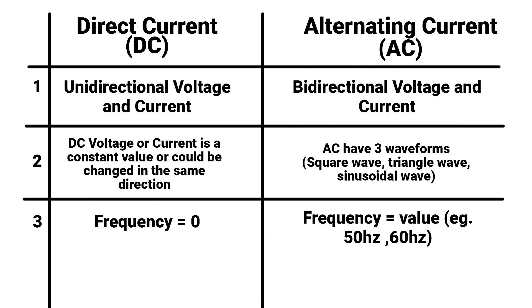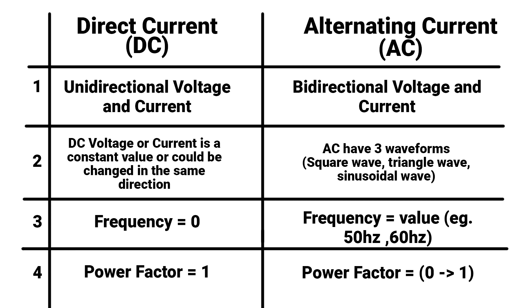In AC, we have frequency, maybe 50 Hz or 60 Hz. In AC, we have power factor, which changes between 0 to 1 depending on the load. You can watch the video on power factor in the description down below. In DC, power factor is always equal to 1.